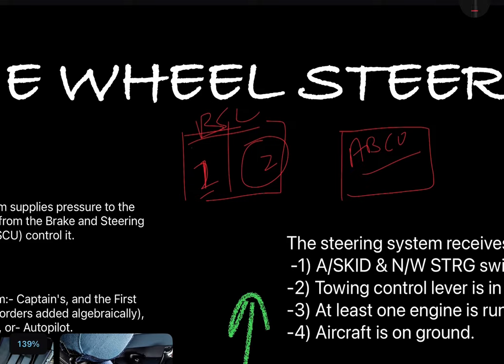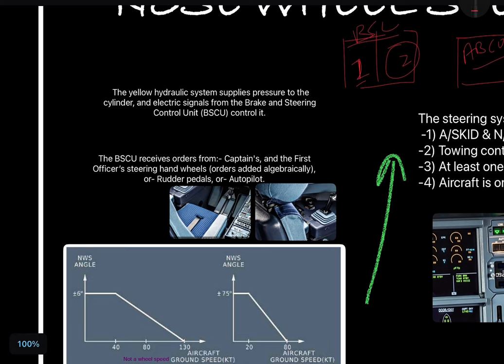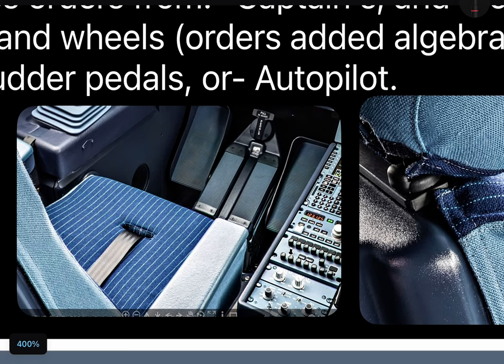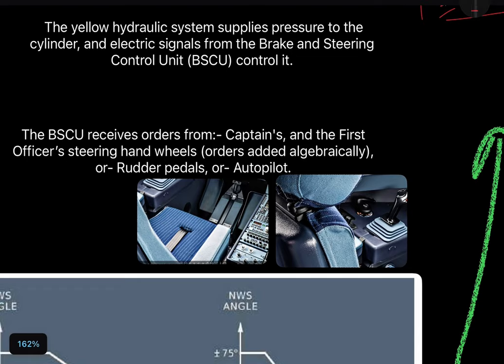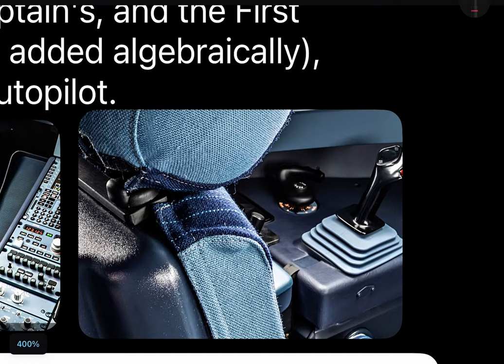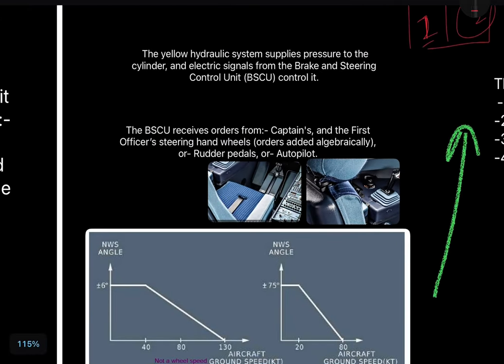The BSCU receives orders to deflect the nose wheel left or right from: number one, the rudder pedals on both the first officer and captain sides; number two, the steering hand wheels of both the first officer and captain — and remember, the orders are algebraically added, meaning the deflection is the sum of both hand wheel inputs; and number three, from the autopilot, which after landing can steer the aircraft on the runway to keep it on the centerline.